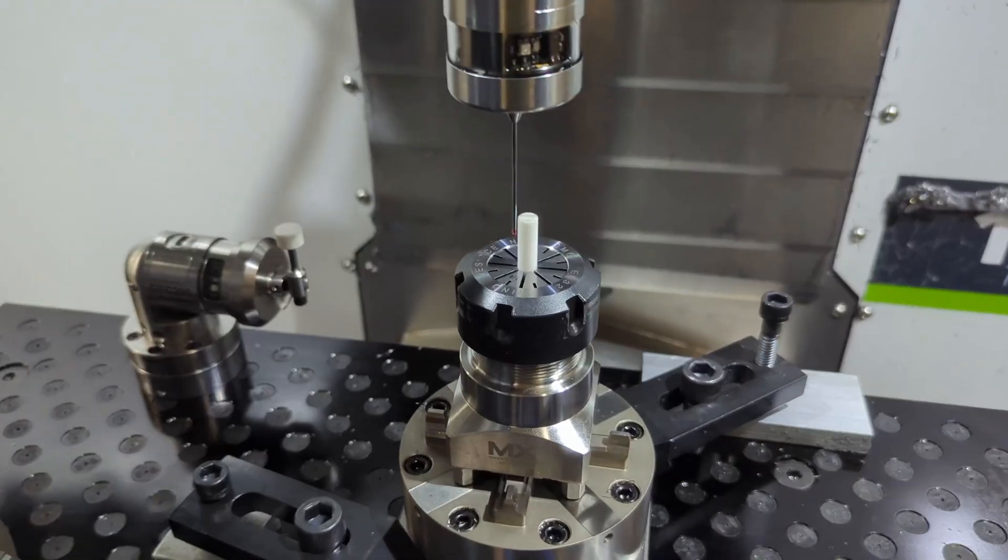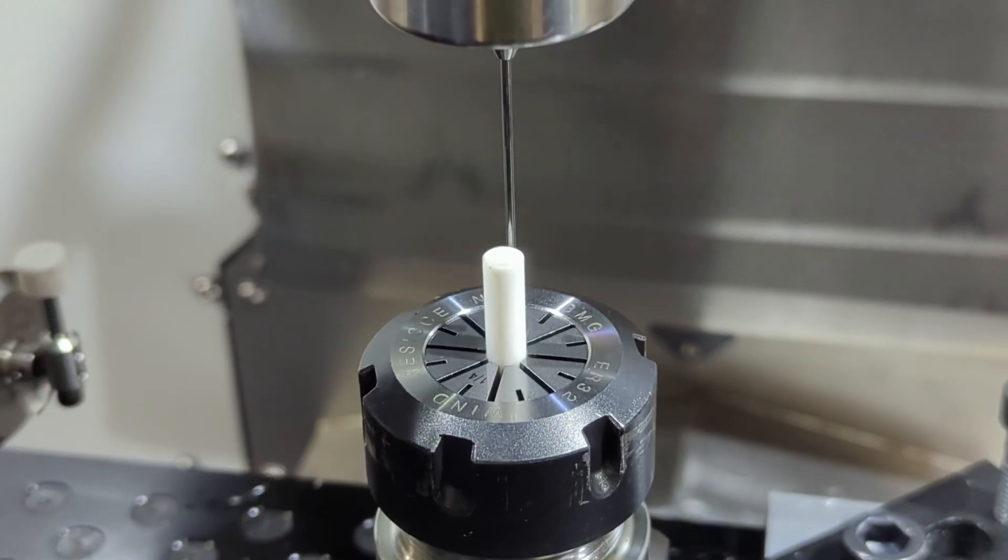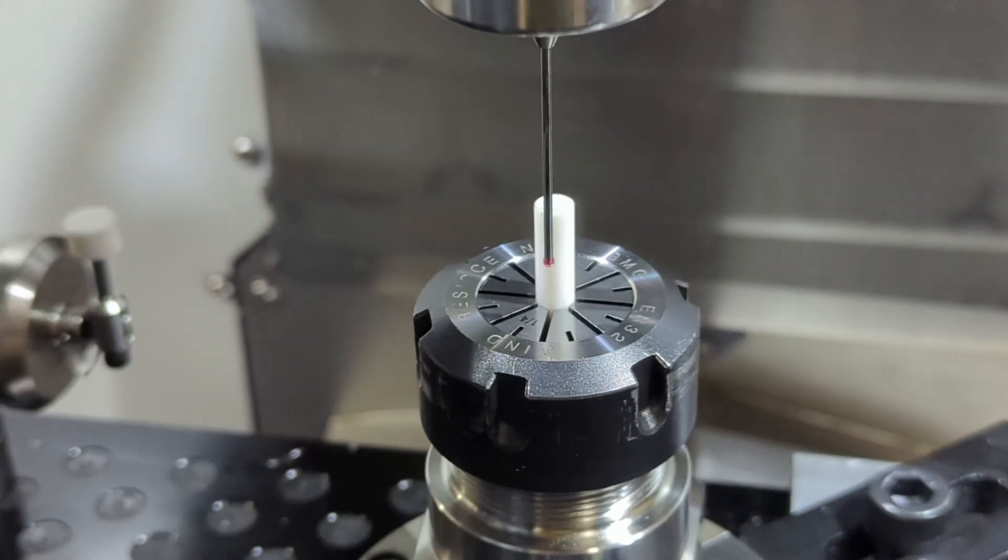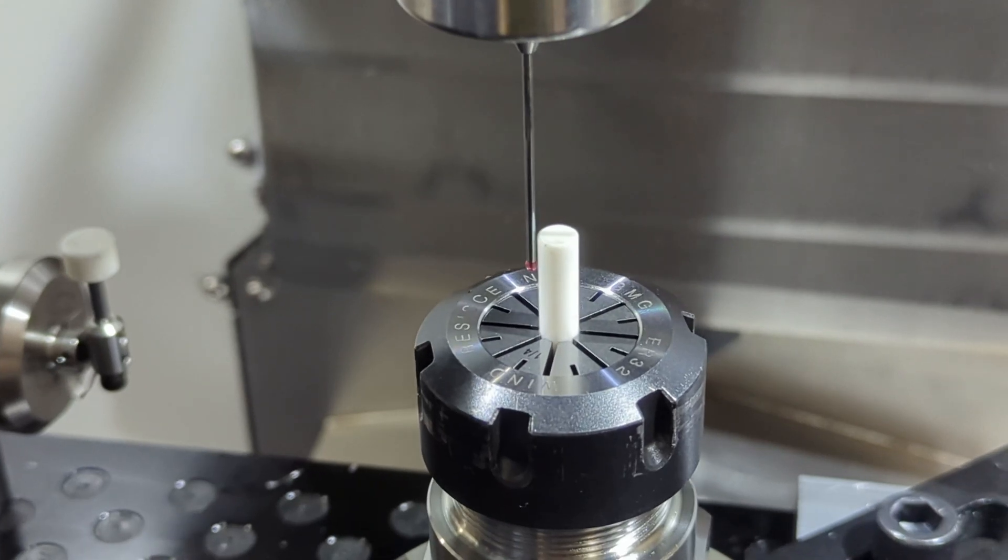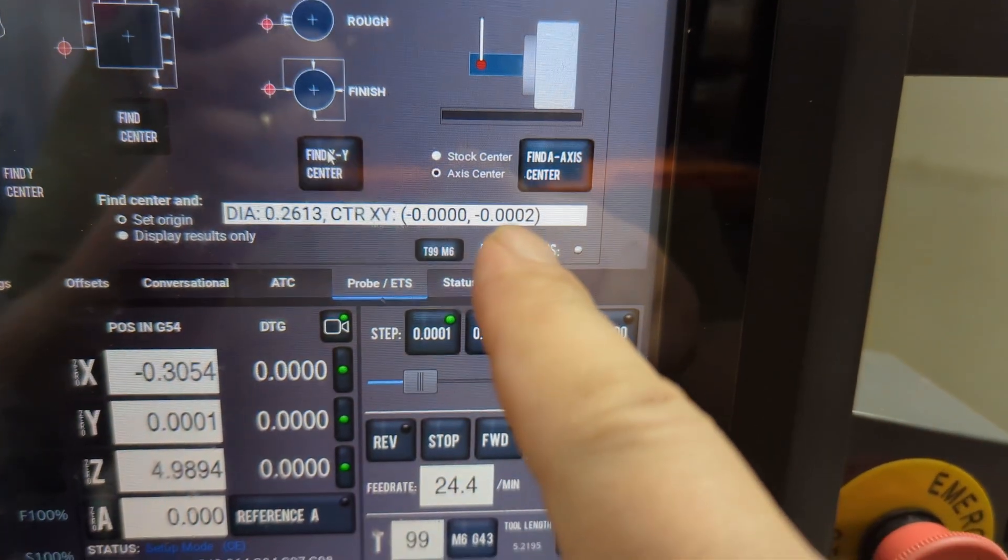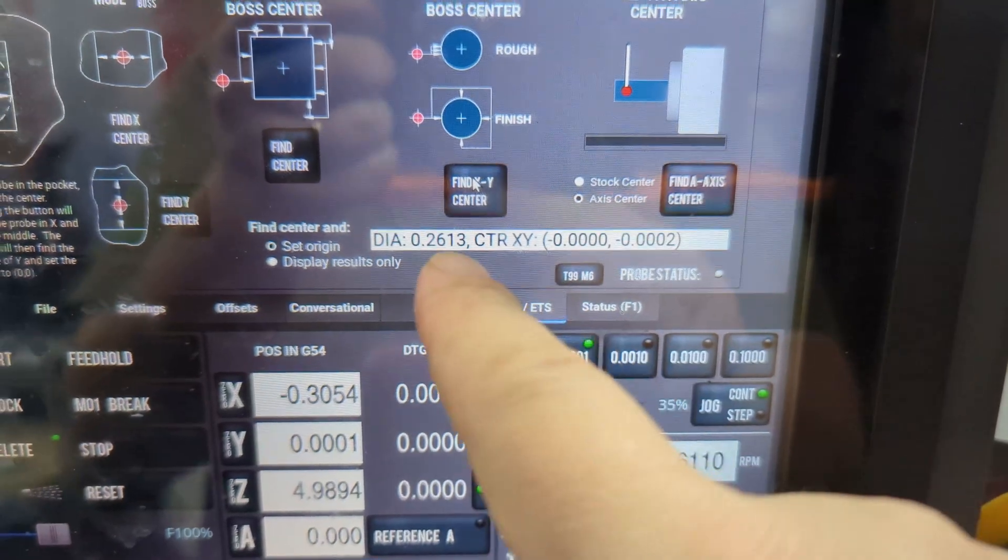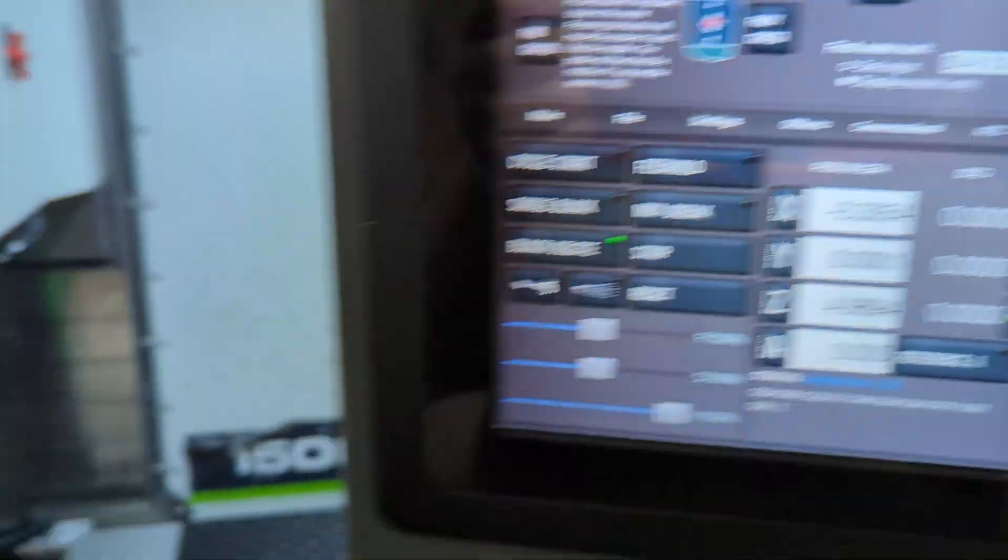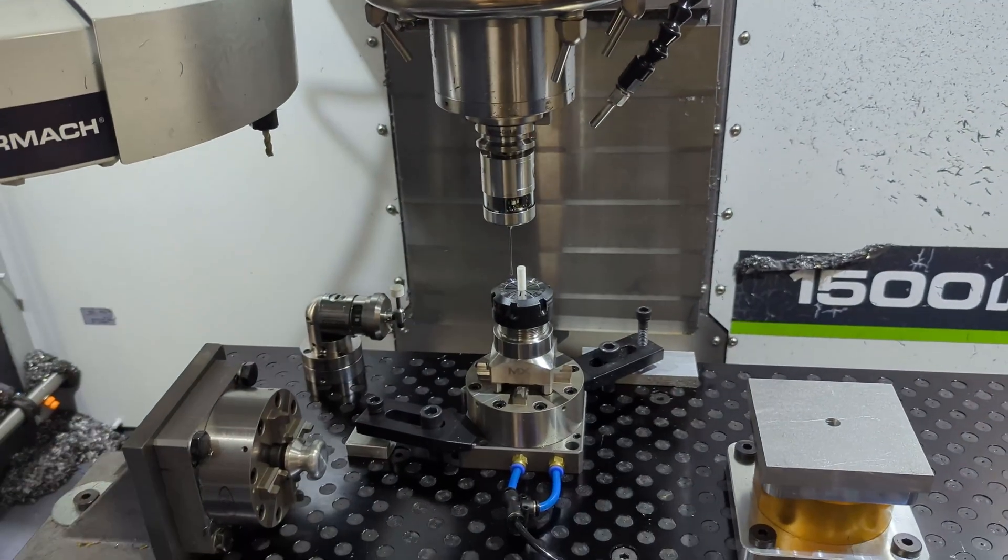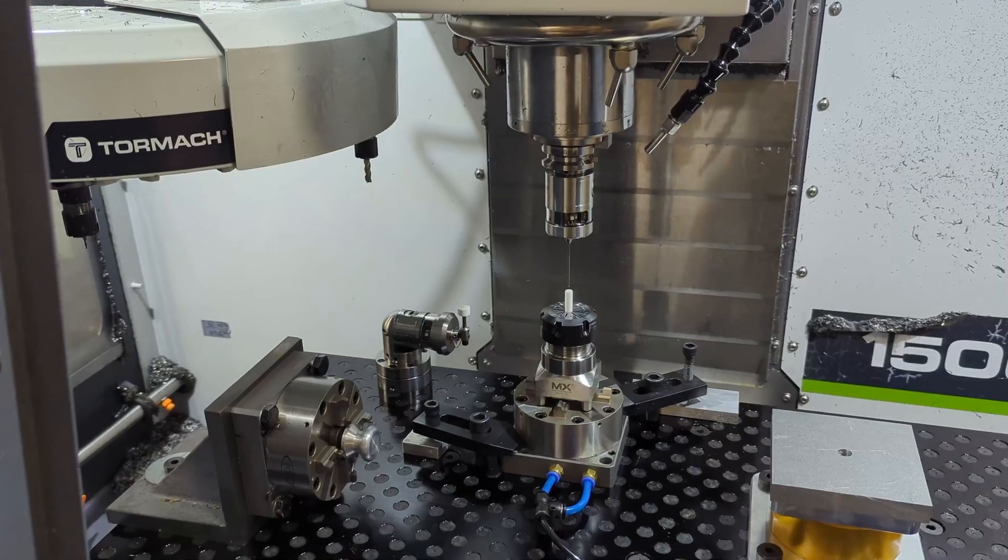And now it will find the center. Let's do it one more time, just to confirm it didn't move at all. It only moves by two tenths. And that is approximately the diameter I measured before with calipers. So we should be good. I guess we do need to do our Z now. Cool.